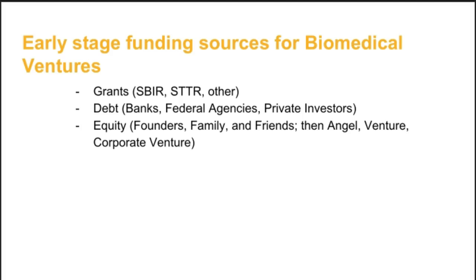Common types of grants for biomedical ventures include the SBIR (Small Business Innovation Research Program) and the STTR (Small Business Technology Transfer Program), which are federal grant programs offered by the United States Small Business Administration. Other grants may be available from charitable foundations and other non-federal governmental agencies. The most common debt sources are banks, but private investors also commonly use convertible notes that start as a loan, accrue interest, and are eventually converted to equity. In most early-stage ventures, it is very common that founders, their family, and their friends are the earliest investors.